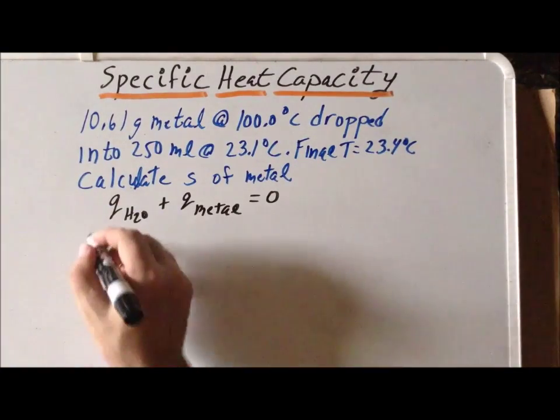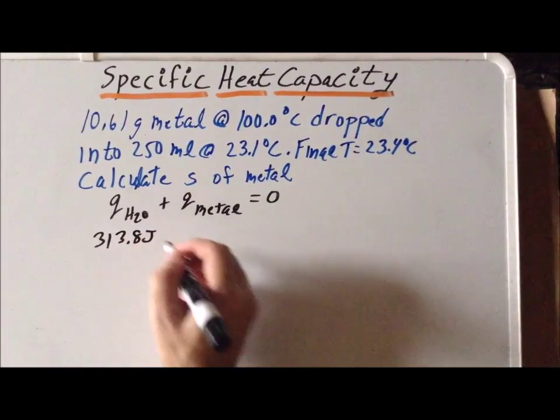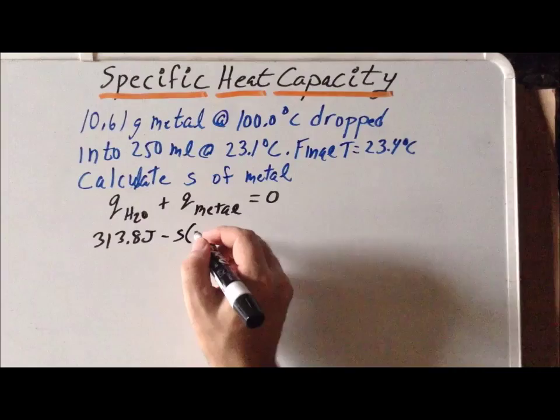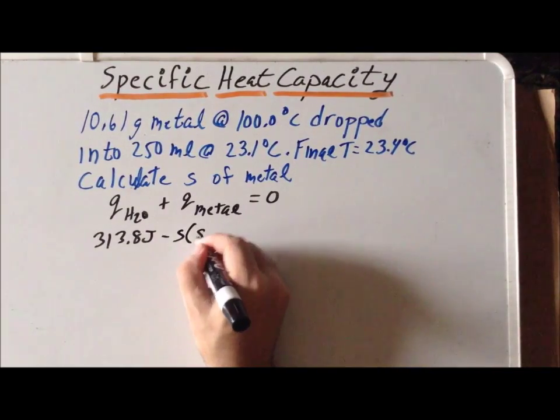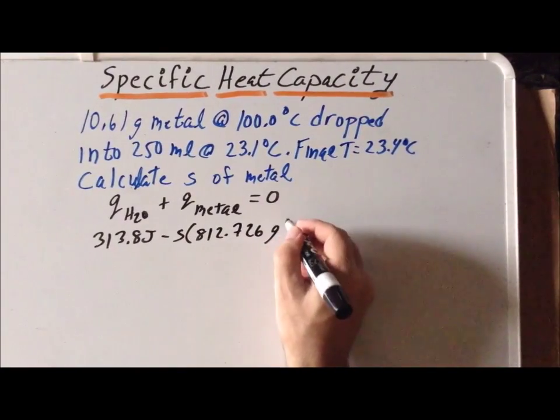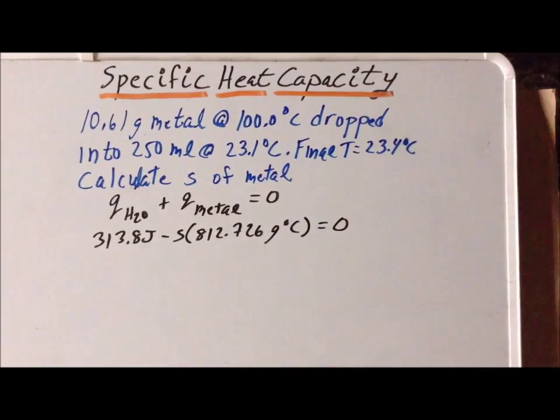So we already have calculated Q of H2O as 313.8 joules. We also know that Q of the metal is minus S times 812.726 grams degree centigrade. And this is equal to zero.